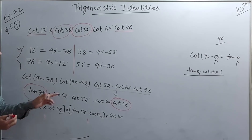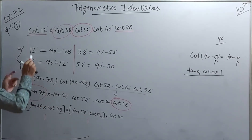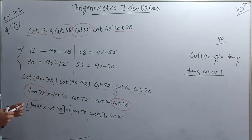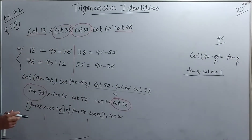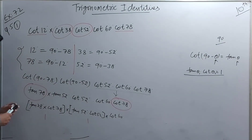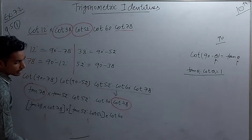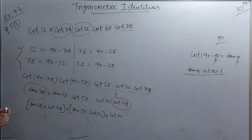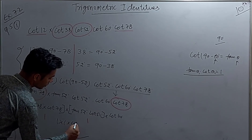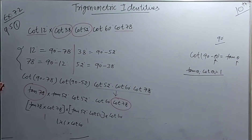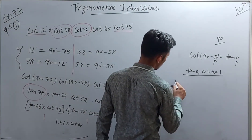We expanded 12° to (90° - 78°) and 38° to (90° - 52°) so that the theta values become the same. Using the identity tan θ × cot θ = 1, each pair equals 1. So the expression reduces to 1 × 1 × cot 60°, and the remaining term is just cot 60°.